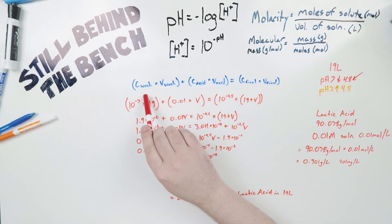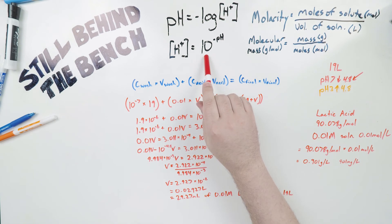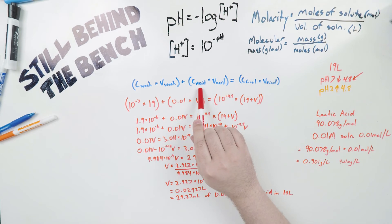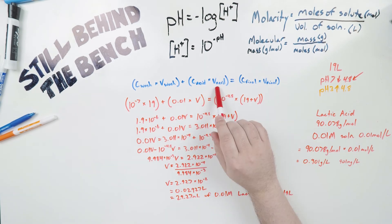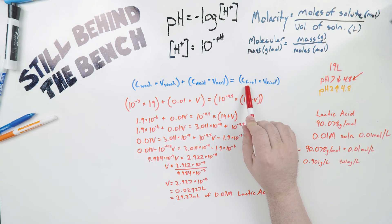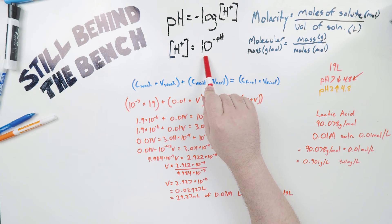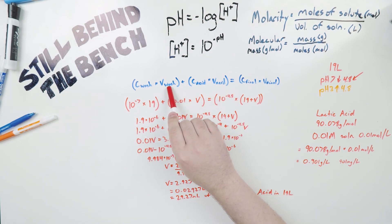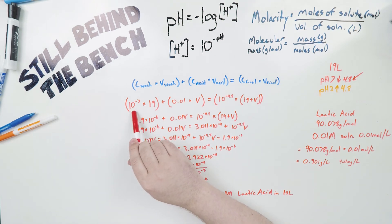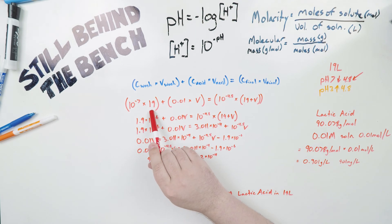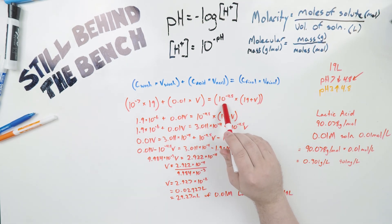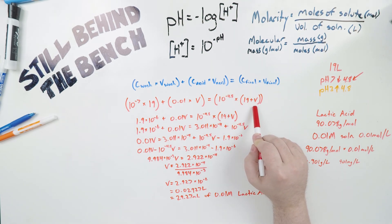Now for the actual formula. We have: concentration of the wash (10 to the negative 7, since we start at pH 7) times the volume of the wash (19 liters), plus concentration of the acid (0.01) times the unknown volume of acid (V), equals the concentration of the final solution (10 to the negative 4.8) times the volume of the final solution (19 plus V). I've written the entire equation out. Concentration of wash: 10⁻⁷. Volume of wash: 19 liters. Concentration of acid: 0.01. Volume of acid: unknown. Concentration of final solution: 10⁻⁴·⁸. Volume of final: 19 plus V.